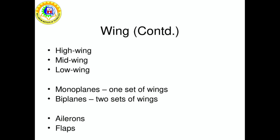The wing may be mounted at various positions relative to the fuselage, whereas biplanes have two sets of wings. A high wing is mounted on the upper fuselage, a mid wing is mounted approximately halfway up the fuselage, and a low wing is mounted near or below the bottom of the fuselage. Ailerons can be used to generate a rolling motion for an aircraft.